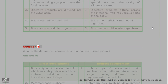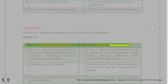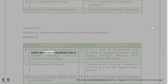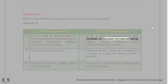Question 5: What is the difference between direct and indirect development? Answer 5: Direct Development vs Indirect Development. 1. It is a type of development in which an embryo develops into a mature individual without involving a larval stage. 1. It is a type of development that involves a sexually immature larval stage, having different food requirements than adults.